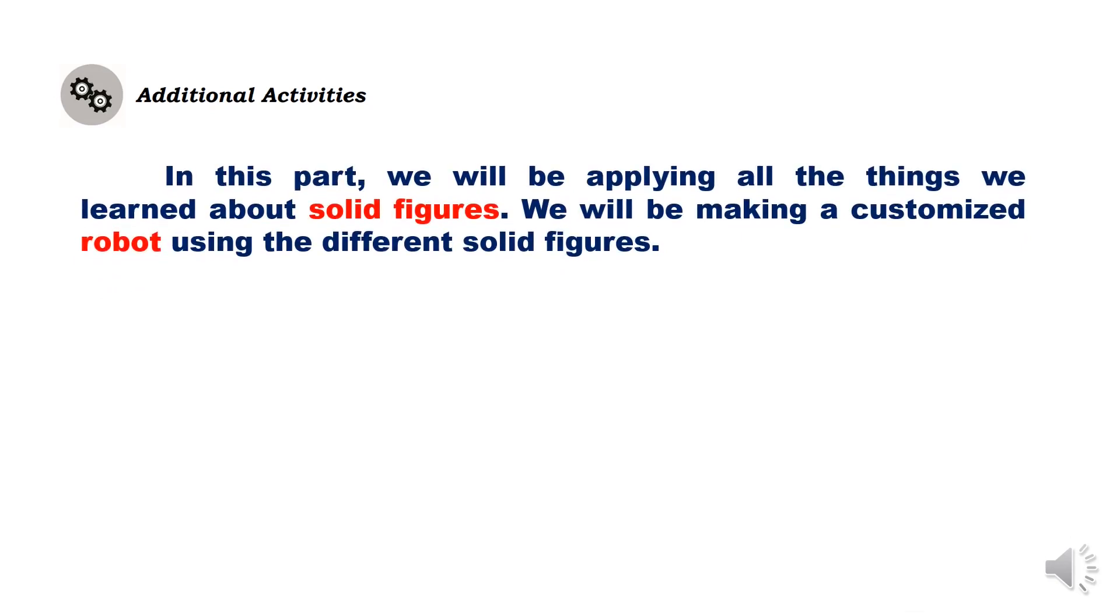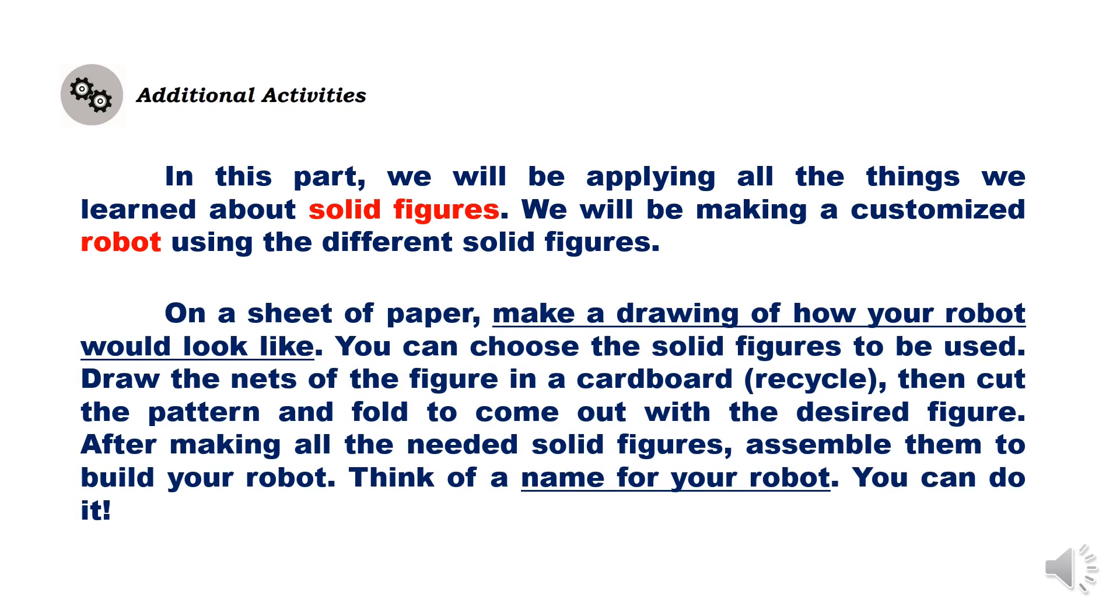In this part, we will be applying all the things we learned about solid figures. We will be making a customized robot using the different solid figures. On a sheet of paper, make a drawing of how your robot would look like. You can choose the solid figures to be used. Draw the nets of the figure in a cardboard or any recycled material. Then, cut the pattern and fold to come out with the desired figure. After making all the needed solid figures, assemble them to build your robot. Think of a name for your robot. You can do it.